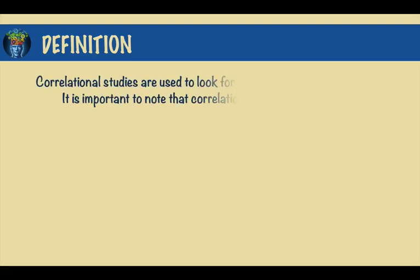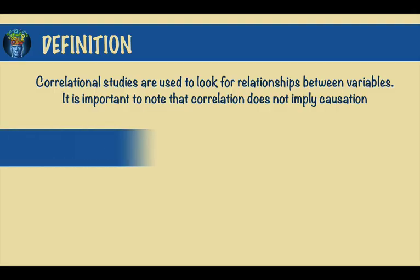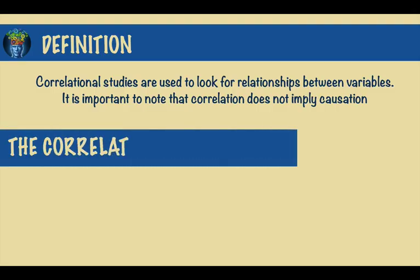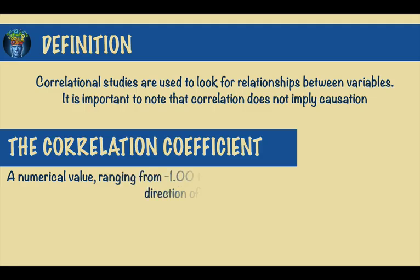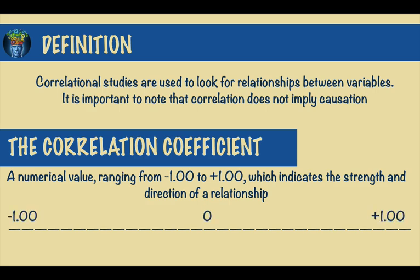Correlational studies are used to look for relationships between variables, but it is important to note that correlation does not imply causation. The correlation coefficient is a numerical value ranging from minus one to plus one, and it indicates the strength and the direction of a relationship.